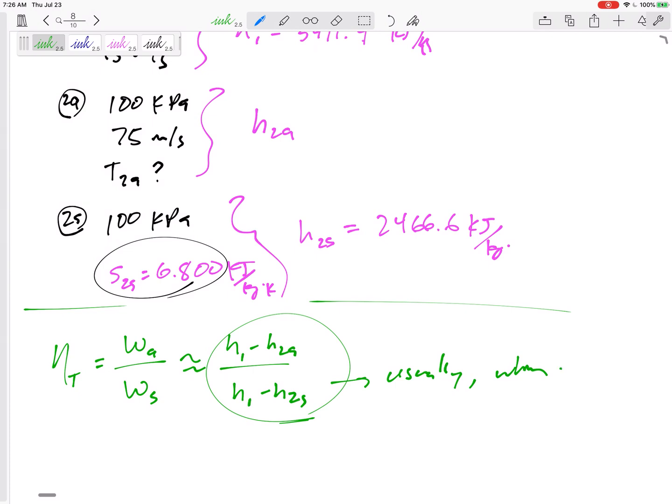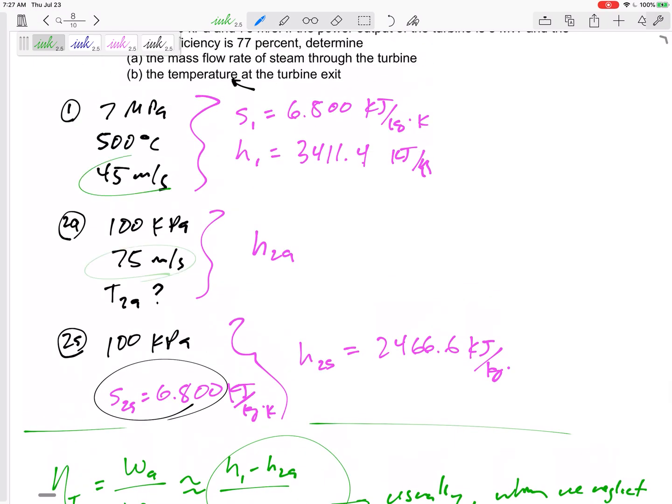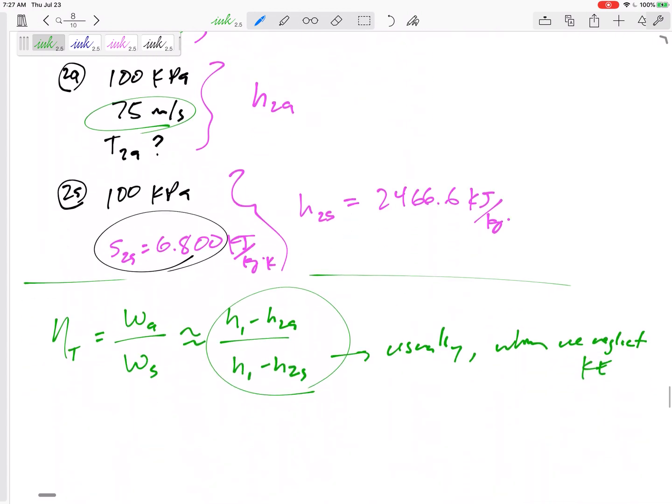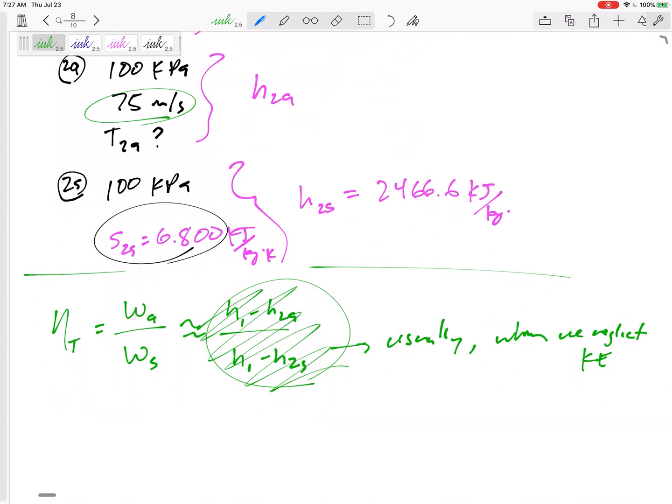It told us these velocities—they're not very large, we probably could neglect it, but when it tells them to us, let's use them. So let's say it's equal to W actual over W isentropic because I was told this isentropic efficiency.